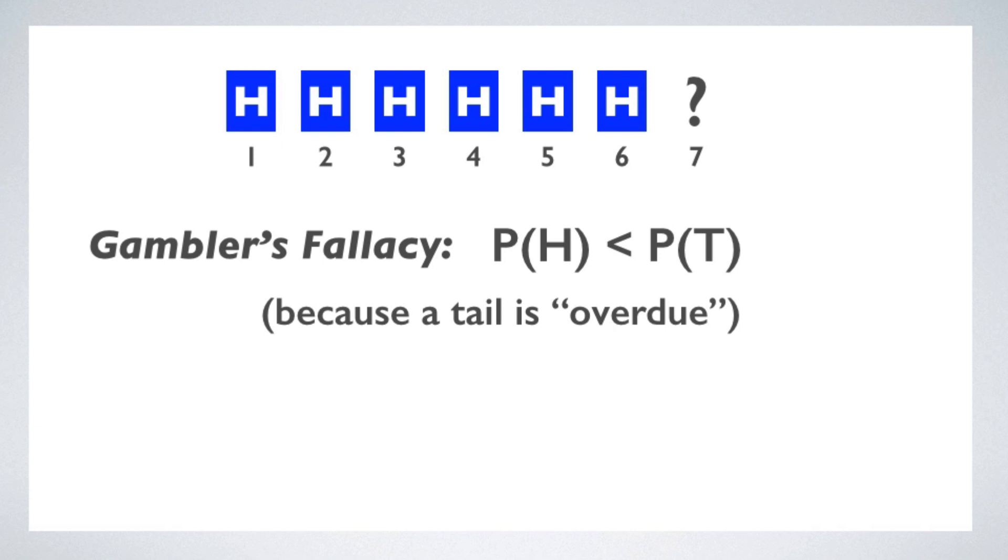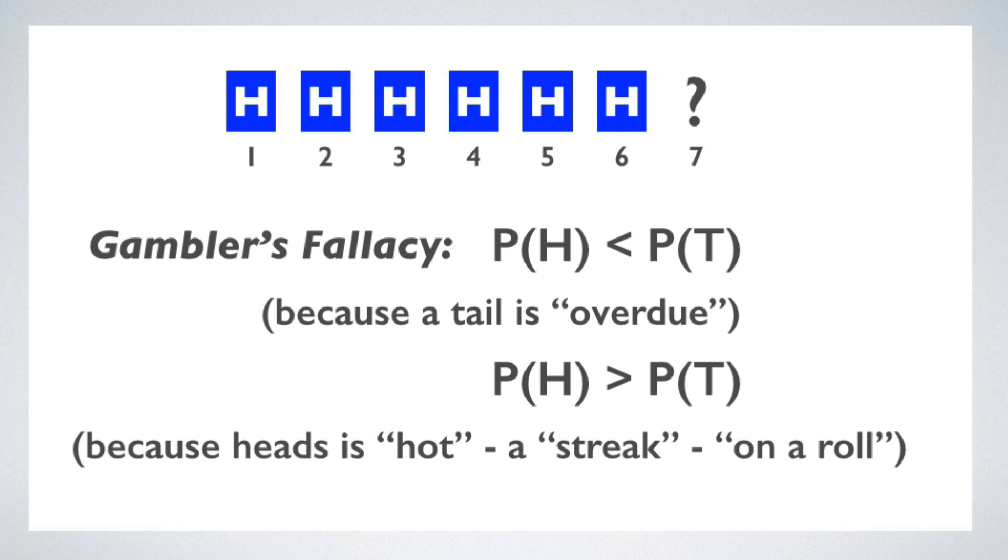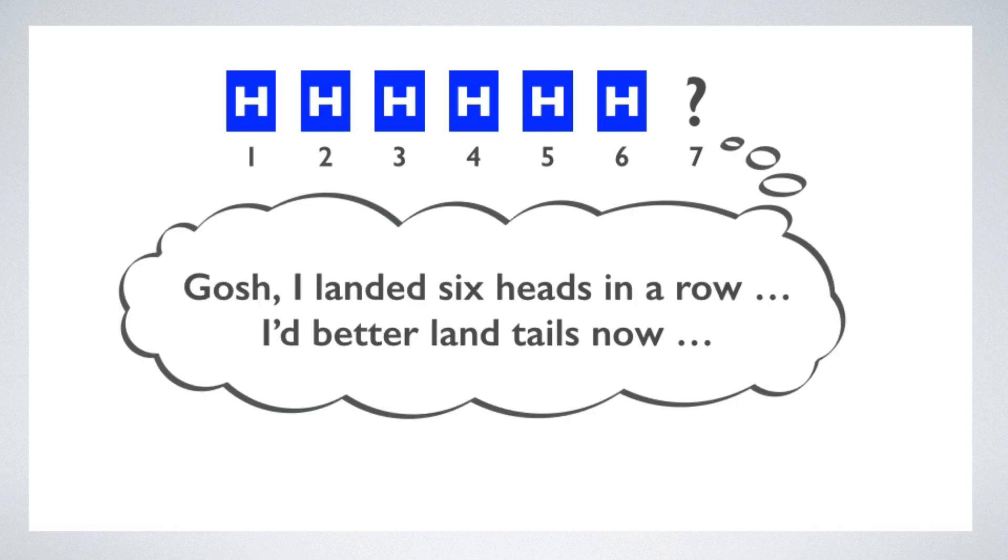Now, sometimes a gambler's intuition will go the other way. Maybe six heads in a row means that heads is hot in the gambler's sense. That what we're seeing is a lucky streak, heads is on a roll. And what it means to be a lucky streak is that it's more likely to continue than not. So we estimate the chance of heads is higher than the chance of tails on the next toss. Both of these ways of thinking commit the gambler's fallacy, since they're both guilty of the same faulty assumption. The faulty assumption is that a coin can somehow retain a memory of its history of prior tosses,